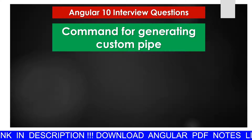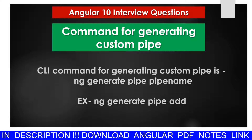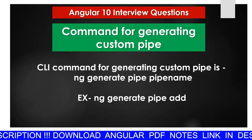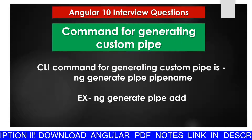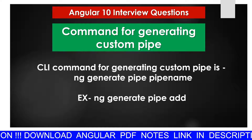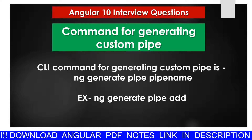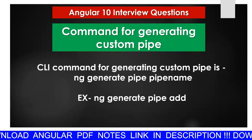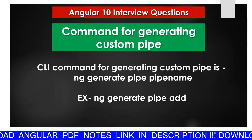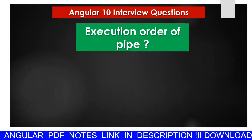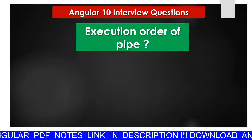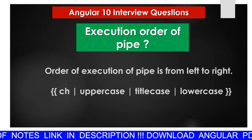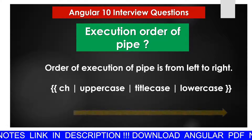What is the command for generating a custom pipe? The command for generating a custom pipe is: ng generate pipe <pipe-name>. For example: ng generate pipe add — where 'add' is the pipe name.